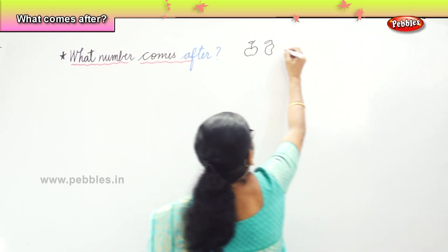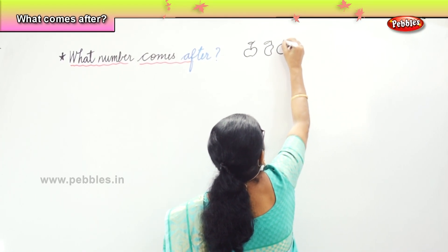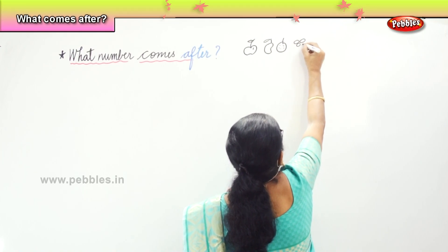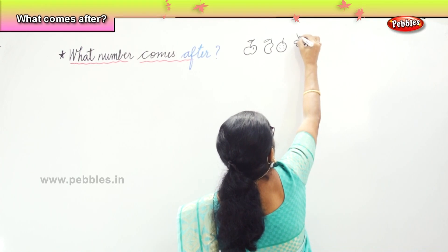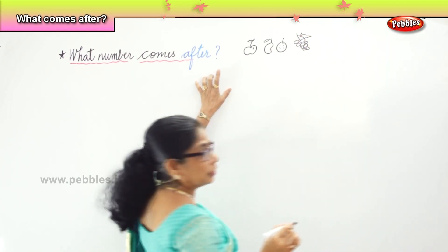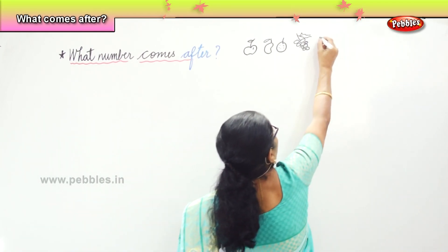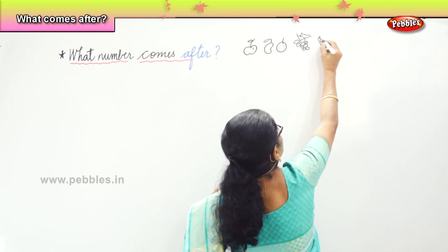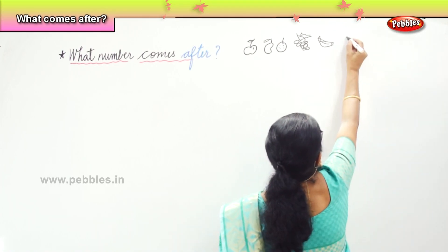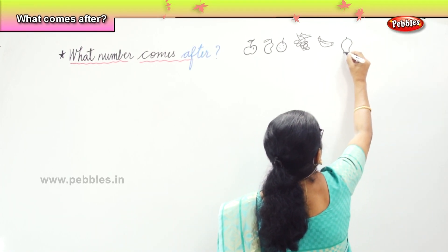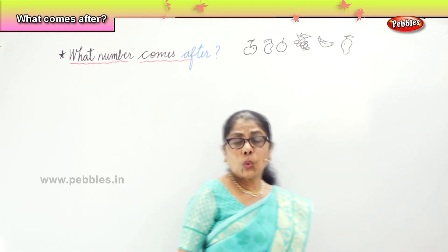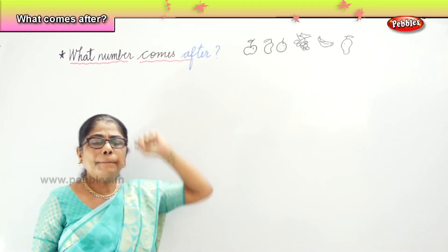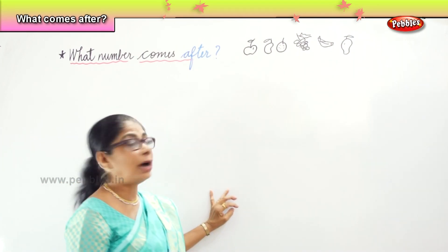I've got some fruit here for you. You have an apple, a mango, then an orange, then maybe a bunch of grapes. Okay, we are learning after. Now, when you have a banana — a pear. We are going to learn to identify what number comes after. Before that, tell me what fruit comes after the grapes.